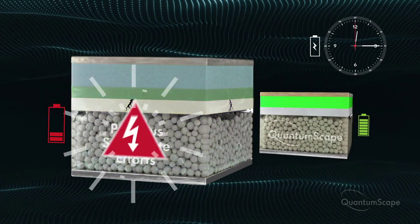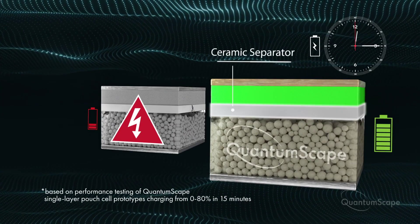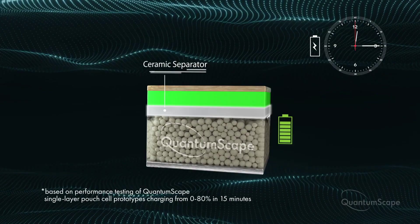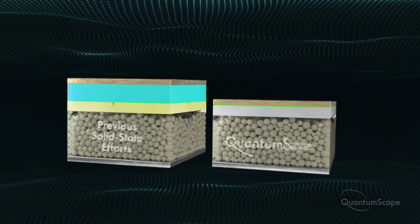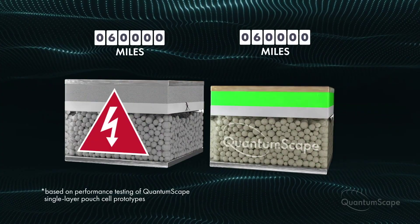In total, the potential value from PowerCo now stands at $261 million. The partnership aims to accelerate manufacturing and enable higher-volume prototype cell deliveries as the technology moves toward commercial deployment.